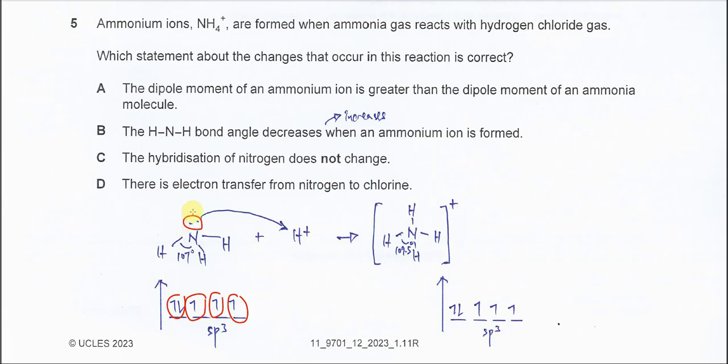And this lone pair will be able to donate to the empty orbitals of the proton and form dative bond. After it forms dative bond with the H plus, it will form this ammonium which is tetrahedral geometry. And the bond angle is now changed from 107 to 109.5 degrees.